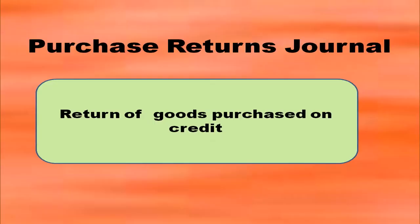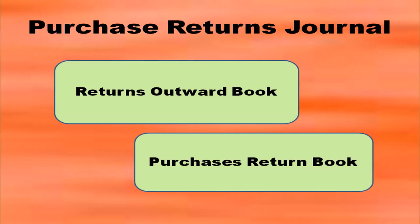Purchase returns journal: return of goods purchased on credit will be recorded in the purchase returns journal. Purchase returns journal is also known as returns outward book, because whatever came inside is returning outward. It is also known as purchases returns book.